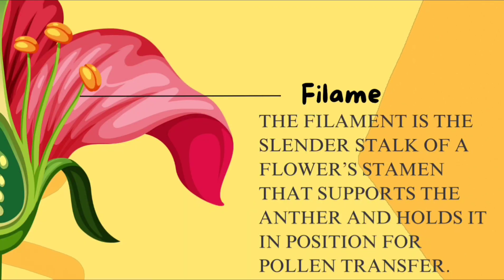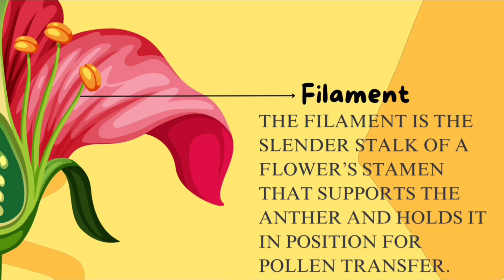This part of a flower is called filament. The filament is the slender stalk of a flower's stamen that supports the anther and holds it in position for pollen transfer.